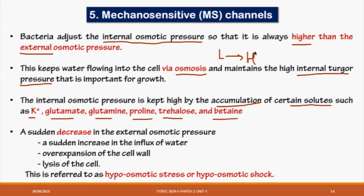The cell ensures that water is always available from the environment and enters the cell by itself — without any force or pressure — simply by osmosis. To achieve this, the cell needs to accumulate solutes so the internal concentration is slightly higher than outside. Examples include K⁺, Glutamate, Glutamine, Proline, Trehalose, and Betaine.